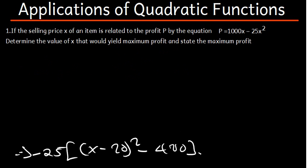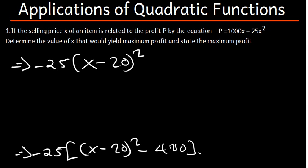Now we distribute the negative 25. This gives us negative 25 times X minus 20 squared, plus — because negative 25 times negative 400 — we get positive 10,000. So our completed square form is: P = negative 25 times (X minus 20) squared plus 10,000.